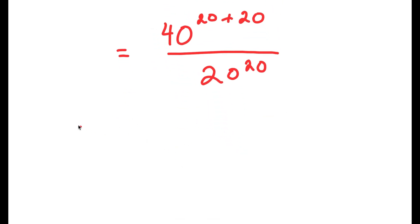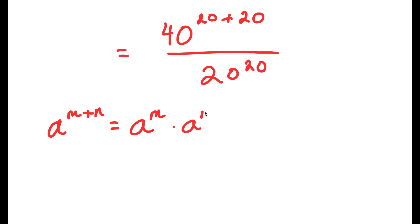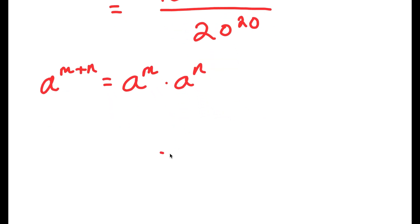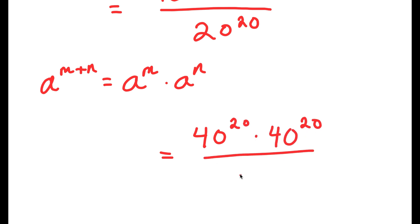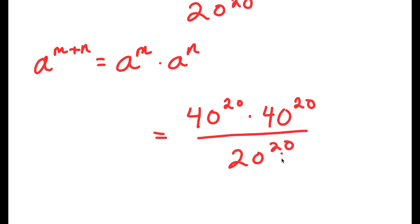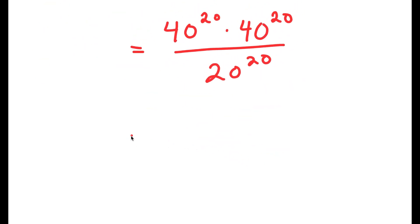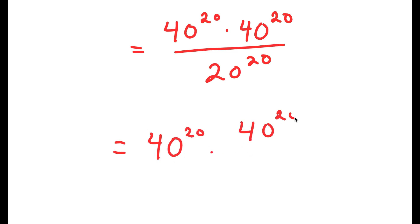Now, if I have something in the form a to the power of m plus n, this is equal to a to the power of m times a to the power of n. So I get 40 to the power of 20 times 40 to the power of 20 over 20 to the power of 20.